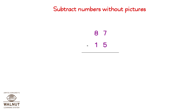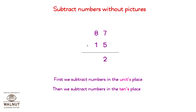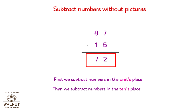Let's try another subtraction: 87 minus 15. We start from the left and then keep going to the right. First, we subtract numbers in the units place: 7 minus 5 is 2. Then we subtract numbers in the tens place: 8 minus 1 is 7. So that is our final answer. 87 minus 15 is equal to 72.